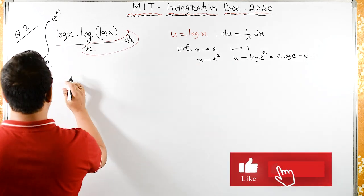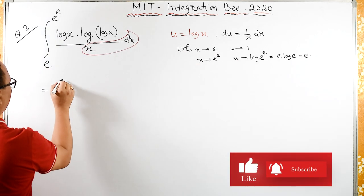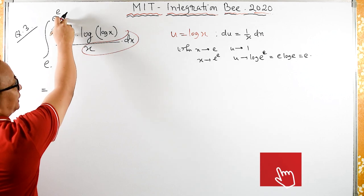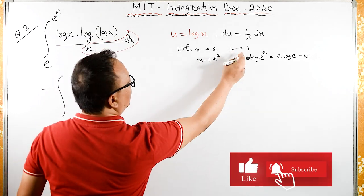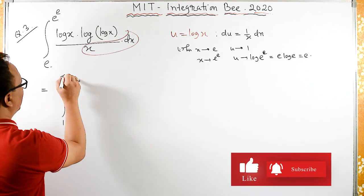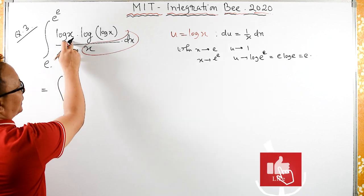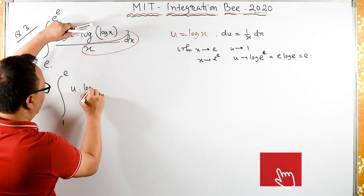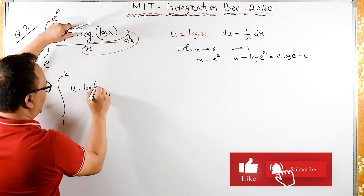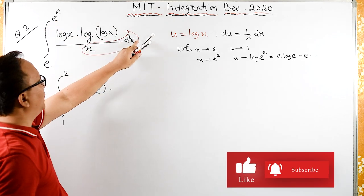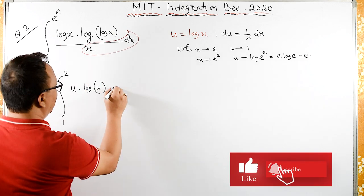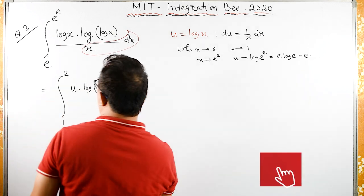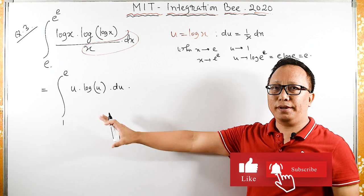So this integral, the limits from e to e raised to e become 1 to e. What is log x? Log x is u. So u times log of log x is u, and dx by x is du.